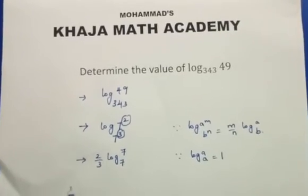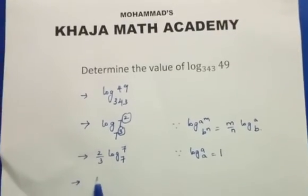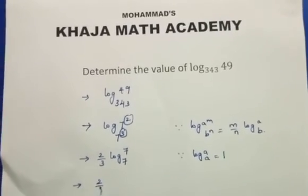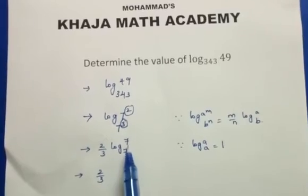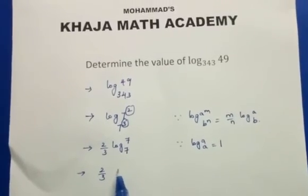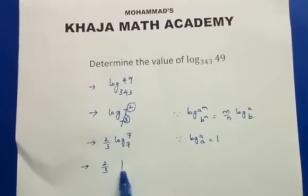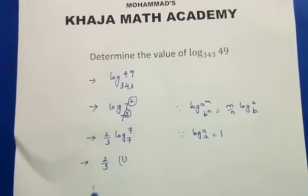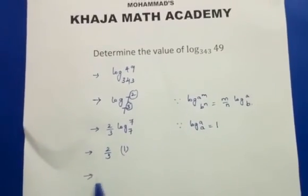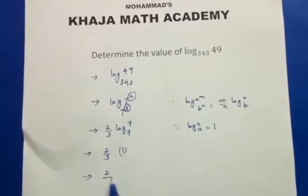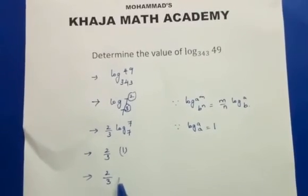The logarithm of a number to the same base has a value of 1, so log 7 to the base 7 equals 1. Therefore, the final answer is 2 by 3.